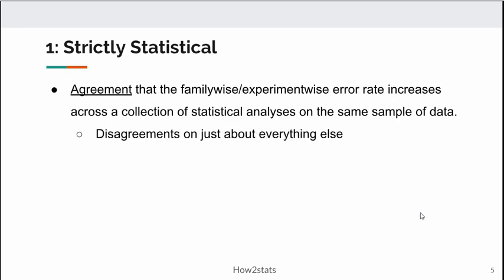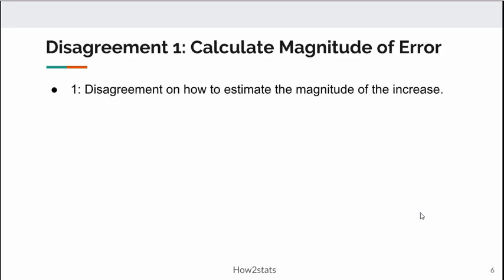There are disagreements, however, on just about everything else. Family-wise error rate might be increasing, but by how much and is it a problem? There are substantial disagreements on that. How do we even calculate the magnitude of the problem? There's disagreement on even how to calculate that. For example, does every single analysis you conduct on a single sample of data influence the family-wise error rate? There is not agreement on that question.